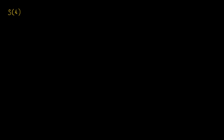Let's review a little bit of what we learned in differential calculus. Let's say we have some function s that gives us, as a function of time, the position of a particle in one dimension. If we were to take the derivative with respect to time of this function s, we're going to get ds/dt, or the rate at which position changes with respect to time. And what's another word for that? That's just velocity. So that we could write as velocity as a function of time.